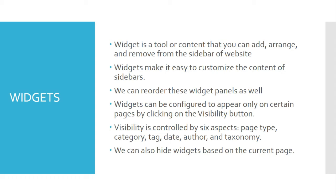Visibility is controlled by six aspects: page type, category, tag, date, author, and taxonomy. For example, if you wanted the archives widget to only appear on category archives and error pages, choose show from the first dropdown and then add respective rules. We can also hide widgets based on the current page.